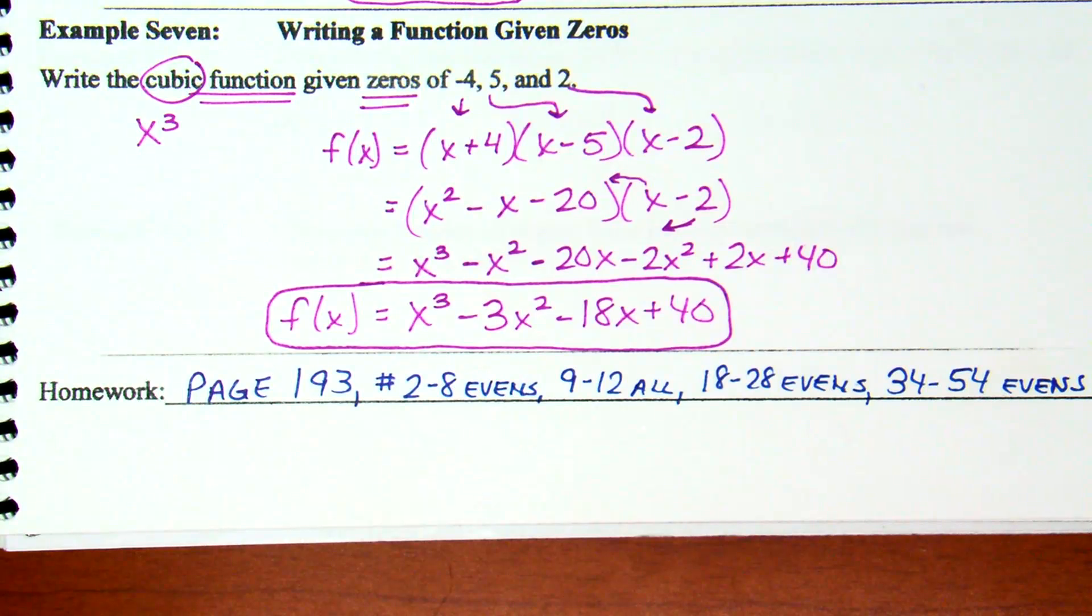It is listed all right there. Can we see it all right? It's stopped at 30. Okay. Good. I see nodding on the camera. Page 193. 2 through 8, evens. 9 through 12, all. 18 through 28, evens. 34 to 54, evens. Due on Monday. Okay. Please have it ready to go on Monday.